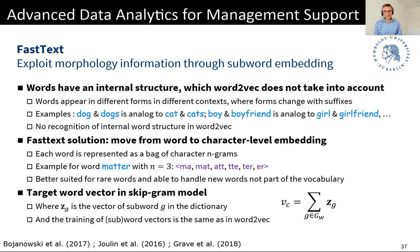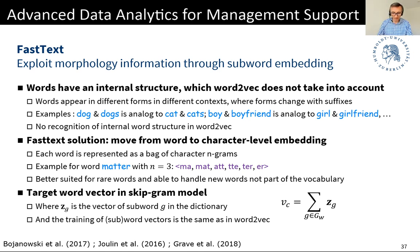Even if we haven't seen a rare word often in our corpus, we can decompose it into subwords — its building blocks — which we may have seen a lot. The word vector of a context word v_c is constructed by summing over the subword embeddings, denoted z, where the set of all subwords making up the target word is denoted g_w. We simply take all subwords, sum their embeddings, and that gives us our word embedding.